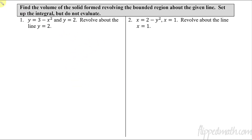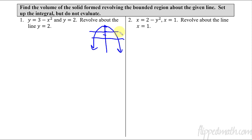To start us off, let's draw a quick picture of this first problem. We have two lines that create a bounded region. This is a parabola that opens down with a y-intercept of 3 — just a quick sketch, nothing fancy or exact. And then y equals 2, so we have a horizontal line here. You can see the region, and I'm revolving it around the line y equals 2. So instead of the x-axis, I'm going to revolve it around that line in a circle.